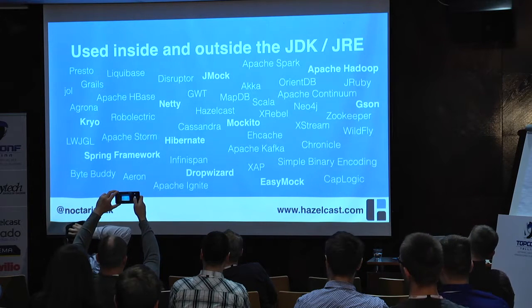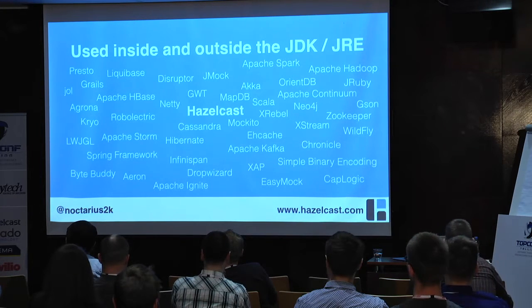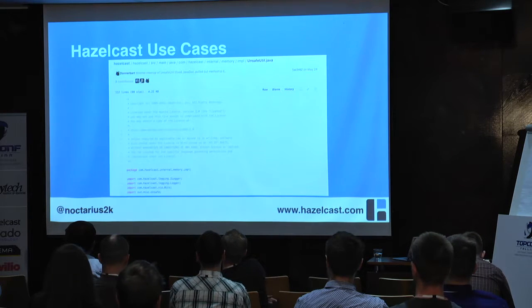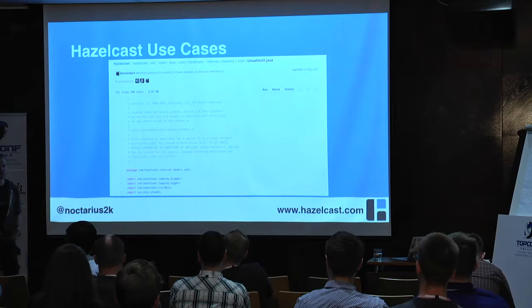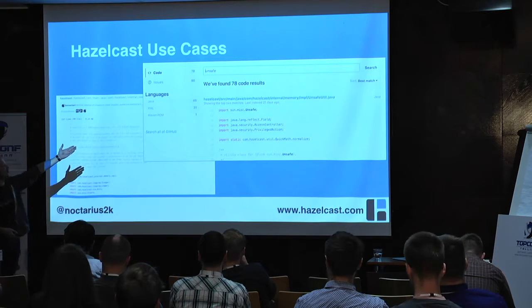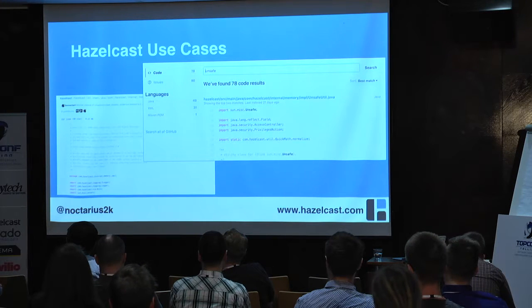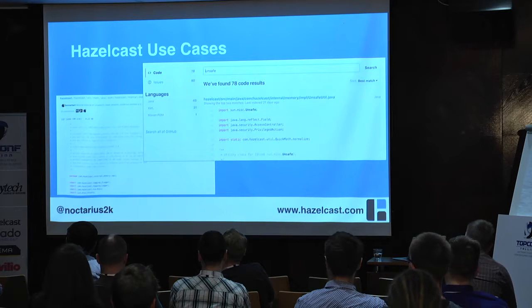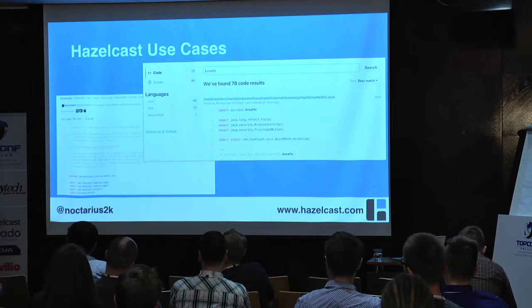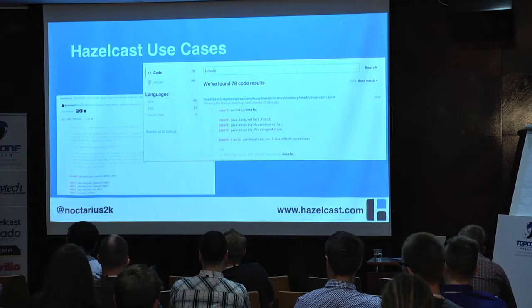We have an internal API which is not supposed to be used, but we're all using it somehow. Hazelcast use cases — obviously we use it too, we want to be fast and sometimes it's the only way. When I search our repository for 'unsafe' I probably get three or four warnings saying it's unsafe to do that, but in general these are real Unsafe use cases. We also try to have a fallback for when a security manager doesn't allow Unsafe.